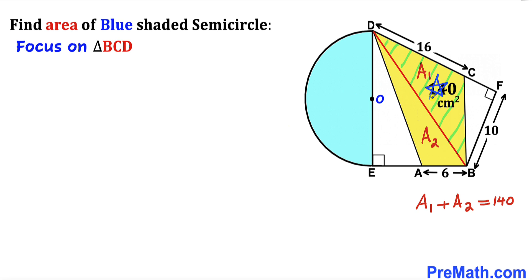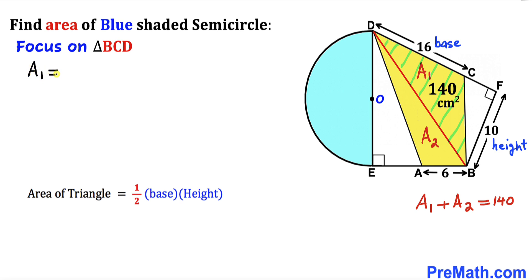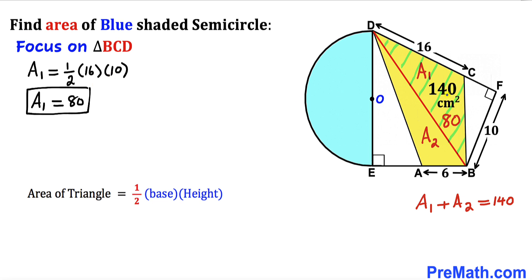Let's focus on triangle BCD and calculate its area, represented by a_sub_1. Recalling the area of a triangle formula: area equals one half times base times height. The base of triangle BCD is 16 and the height is 10. So a_sub_1 equals one half times 16 times 10, which simplifies to 80 centimeters square.